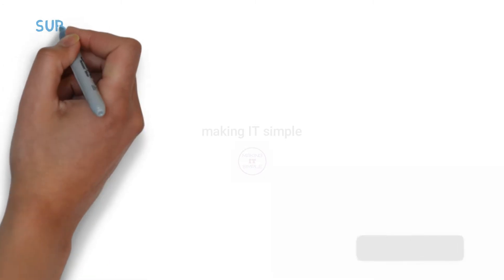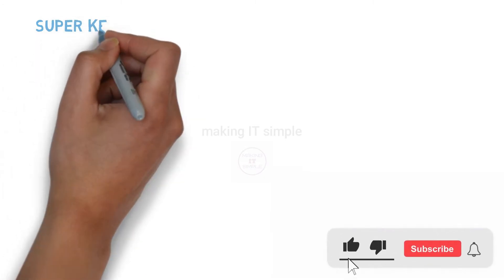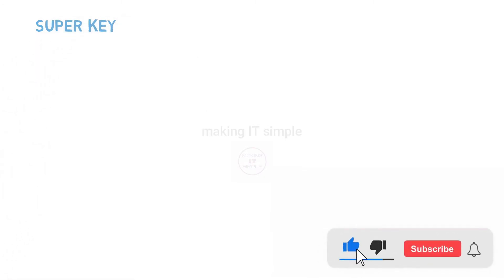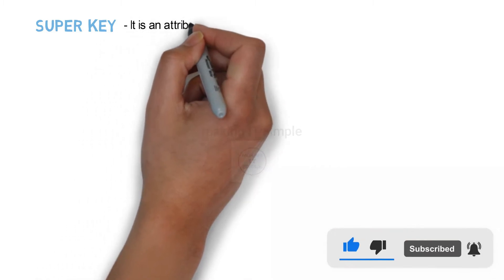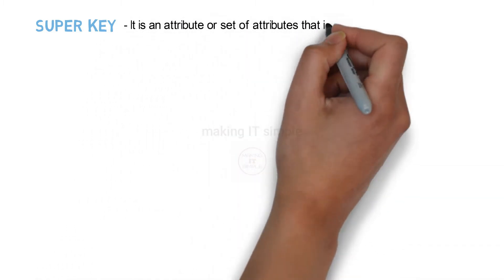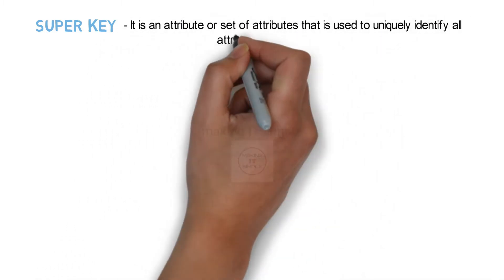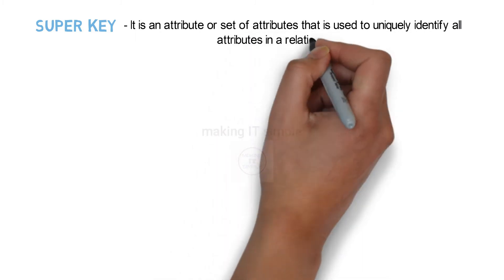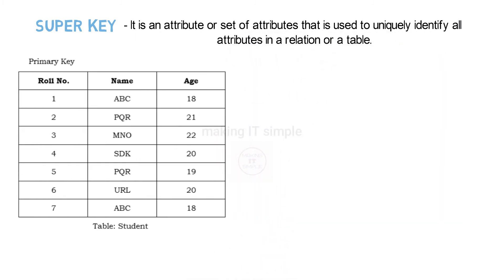In the previous video we saw about primary key. Now we will see what is a super key. Let us start with a definition. A super key is an attribute or set of attributes that is used to uniquely identify all attributes in a relation or a table. Let us try to understand this with an example.